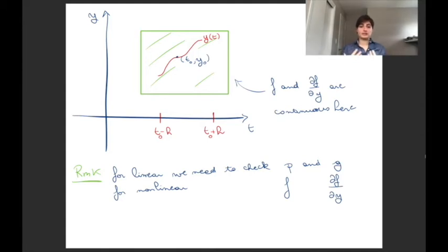The extra difficulty is that before we had p and g only being functions of time, so that was the only variable we had to check continuity with respect to. But now f and df/dy both are two-variable functions. They are functions both of time and of y. So we need to check continuity in both directions.